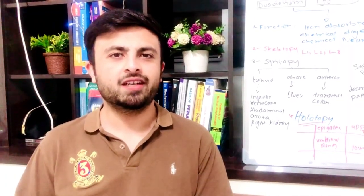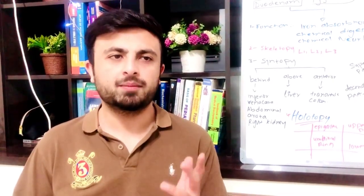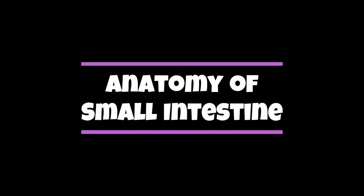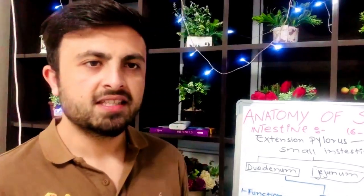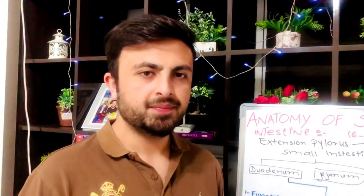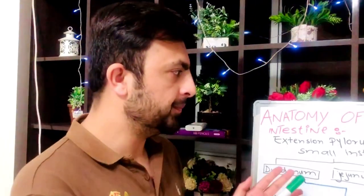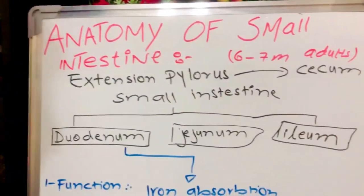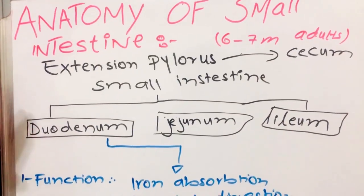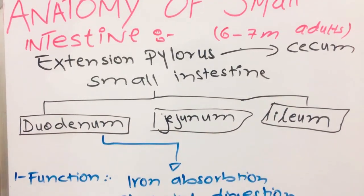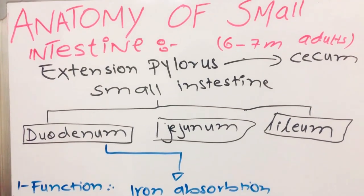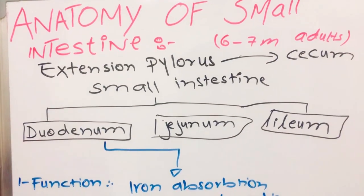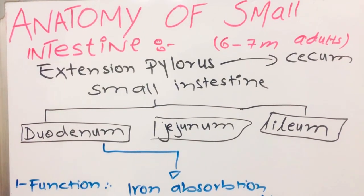Hello guys, we will continue our video lecture series on the digestive system anatomy. Today we will discuss the anatomy of the small intestine. The small intestine starts from the pylorus and extends through three parts: first is the duodenum, second is the jejunum, and third is the ileum. The average length of the small intestine is six to seven meters in adults.